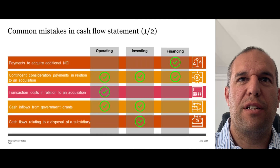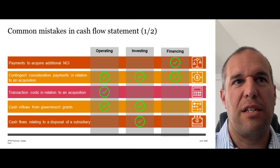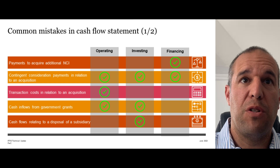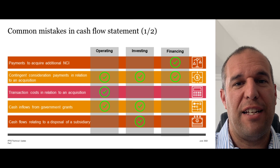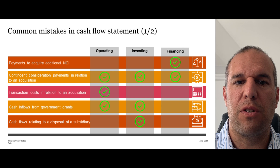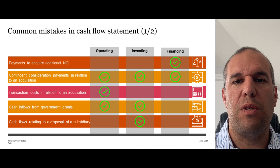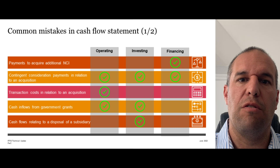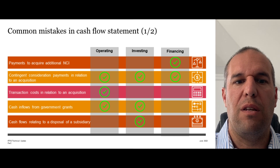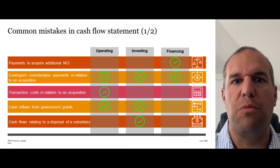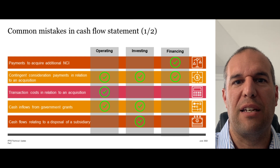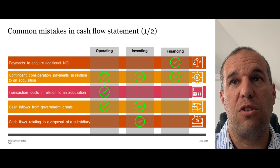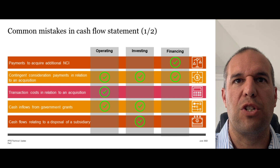Let's briefly look at some other common mistakes. The first is payments to acquire an additional non-controlling interest, or NCI — these are financing cash outflows, though sometimes folks classify them as investing. Another common mistake is the settlement of a share-based payment where the entity expends cash to buy shares to give to employees. Folks naturally think that must be an operating cash outflow because you're paying an employee cost, but the acquisition of the shares continues to be a financing cash outflow.